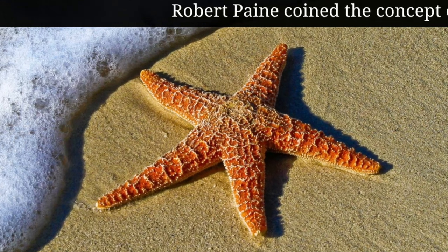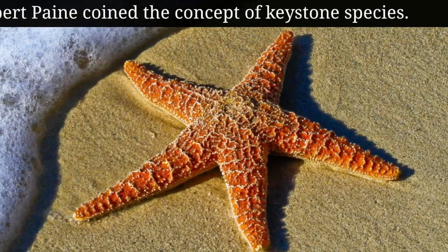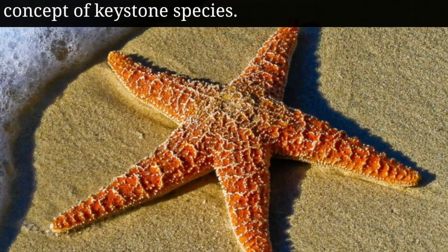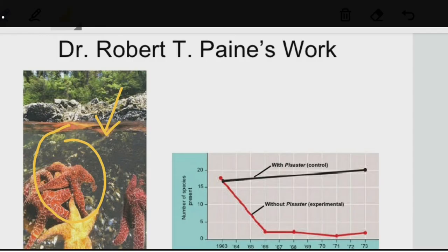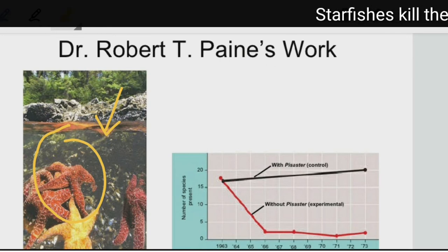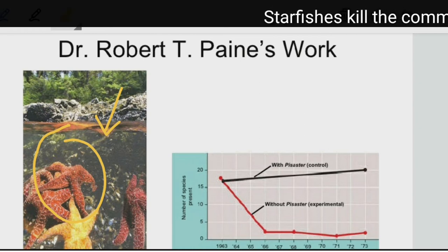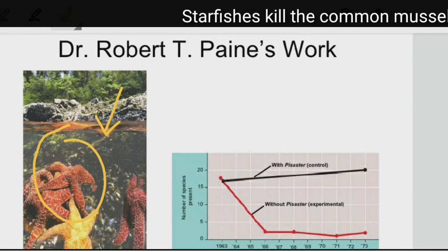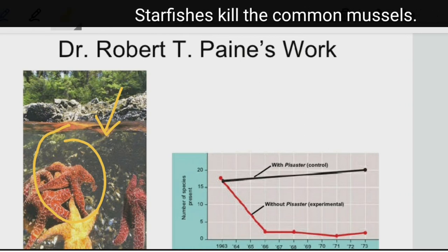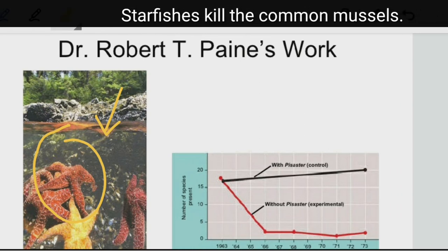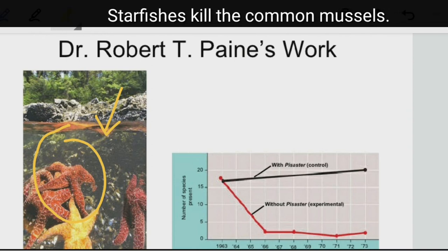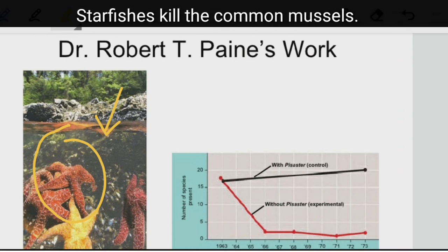Robert T. Payne coined the concept of keystone species. He studied different ecosystems in the intertidal zone and found a few species of starfish to be keystone species. In one of his studies, he found that a particular species of starfish eats the common mussel and protects the entire ecosystem from a potential disaster.